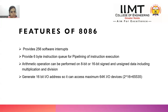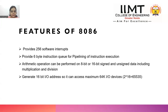The 8086 has a six-byte instruction queue for pipelining and instruction execution, which we will discuss in the architecture section. Arithmetic operations can be performed on both 8-bit or 16-bit signed and unsigned data. It can also access up to 64K input/output ports via the 16-bit I/O bus.